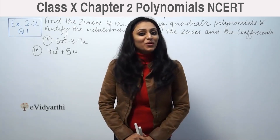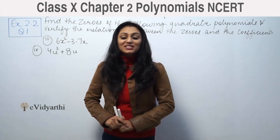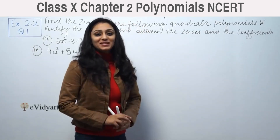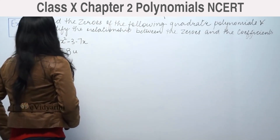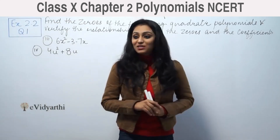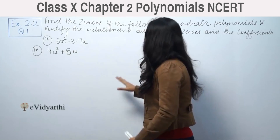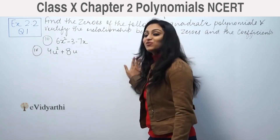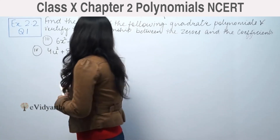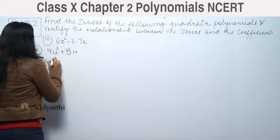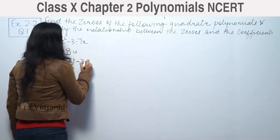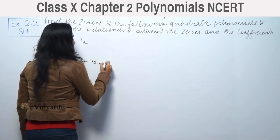Hi, this is Khushpur with another question on polynomials. This is question number 1 from exercise 2.2, page number 33 from NCERT. We need to find the zeros of the following quadratic polynomials and verify the relationship between the zeros and the coefficients. The given polynomial is 6x squared minus 3 minus 7x equal to zero.